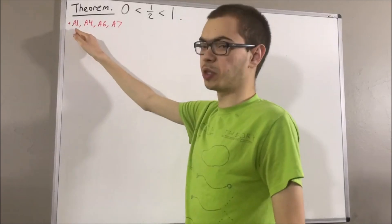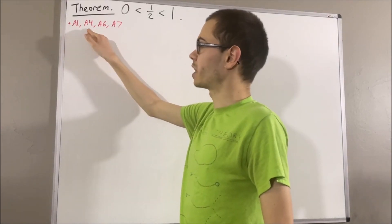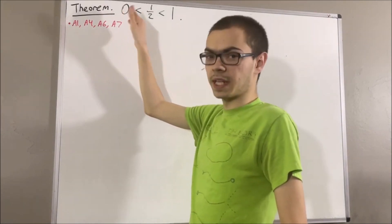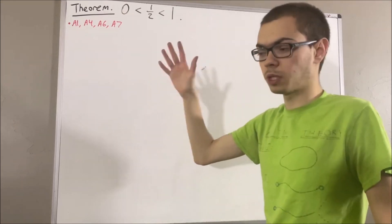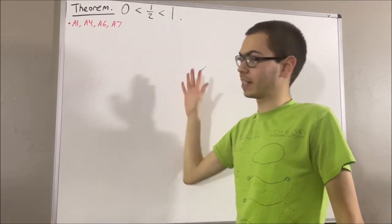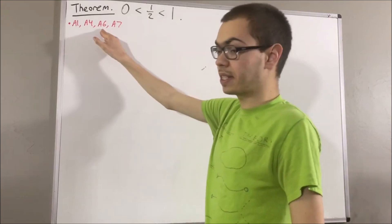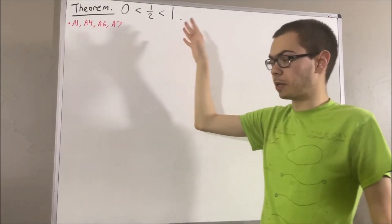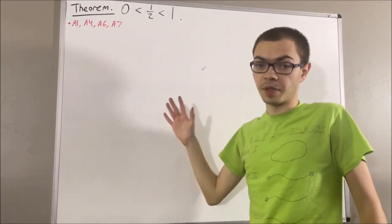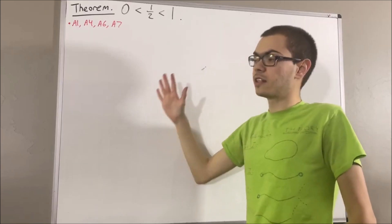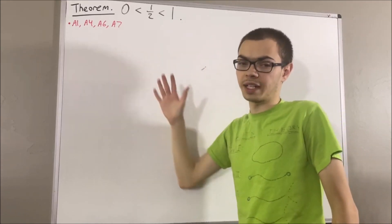Axiom 1 is just the commutative law. Axiom 4 tells us about the real number 0, and it tells us that for all real numbers x, x plus 0 is equal to x. Axiom 6 tells us about the real number 1. We have that 1 is distinct from 0, and for all real numbers x, 1 times x is equal to x.